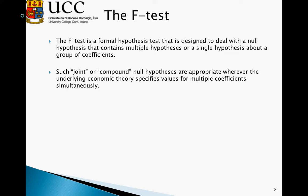For instance, in a Cobb-Douglas production function where the returns to capital and labour are assumed to be constant, we are assuming that the alpha and beta values for capital and labour sum to 1. So we are imposing alpha plus beta equals 1 as a hypothesis.